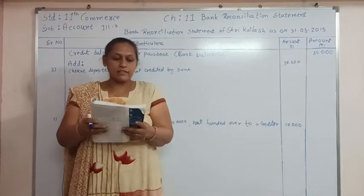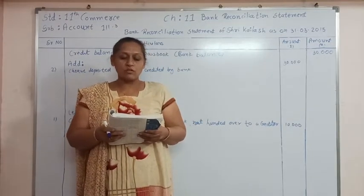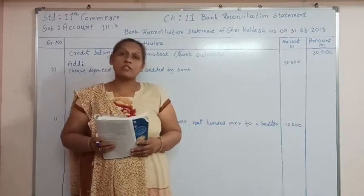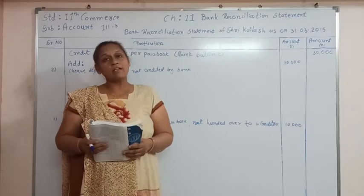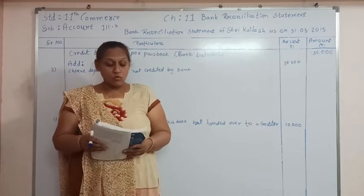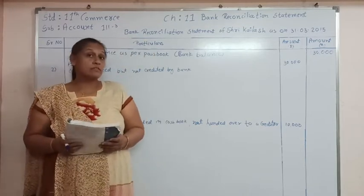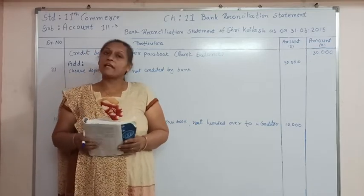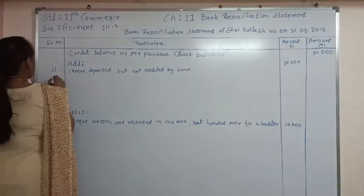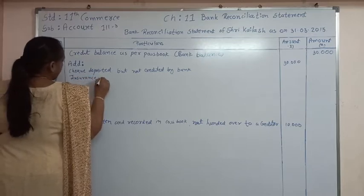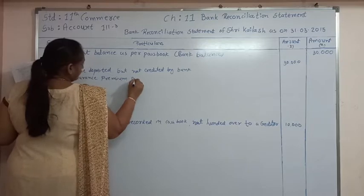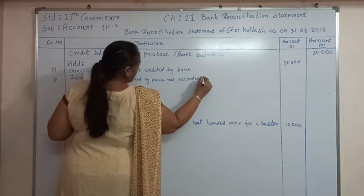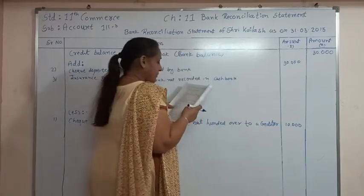Transaction number 3: the bank has paid rupees 20,000 for insurance premium, and Kailas received this information on 2/4/15. The bank paid the insurance expense for Kailas, which was not known to Kailas, so it is not recorded in the cashbook but is recorded in the passbook. Because of that the bank balance is reduced; to make both balances equal we have to add it. Third entry: insurance premium paid by bank — rupees 20,000.